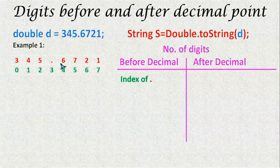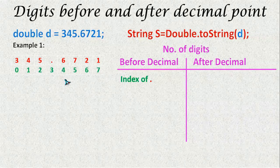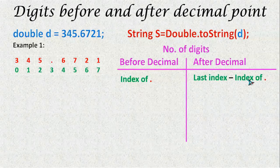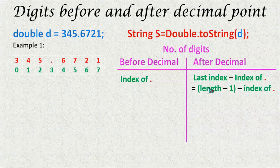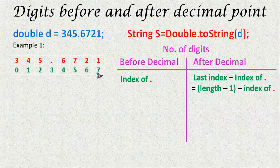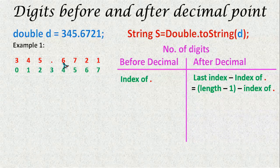If we want to know the number of digits after this decimal point, we can do total number of digits present minus digits present before the decimal point. Otherwise we can do last index minus index of point. Instead, we say length minus 1 minus index of point to get the result. That is 8 minus 1, which is 7 — the last index — then 7 minus index of this dot which is 3, so 7 minus 3 becomes 4. So there are 1, 2, 3, 4 digits.